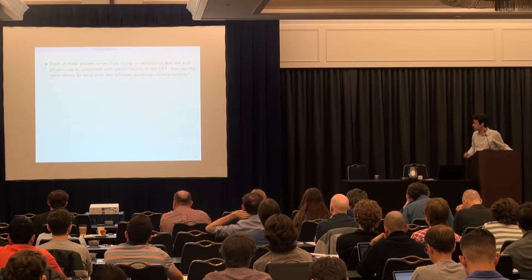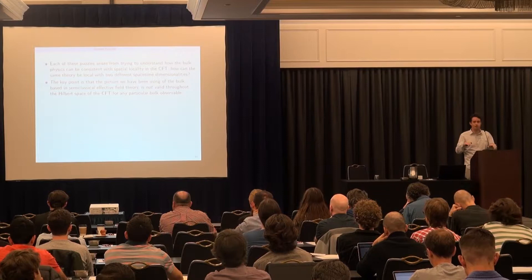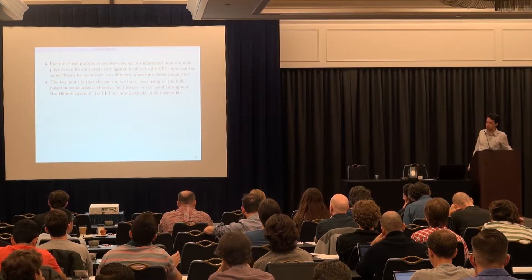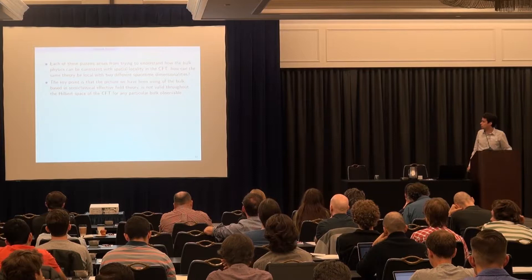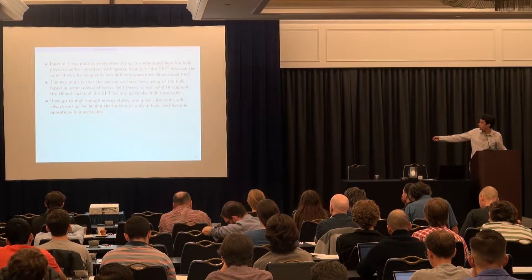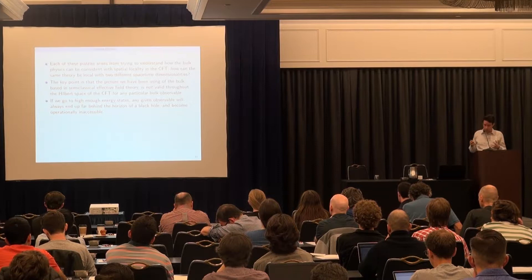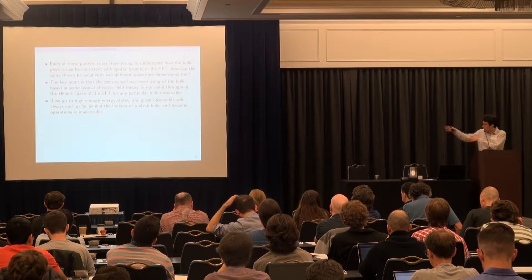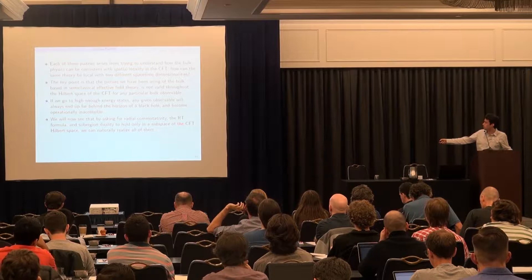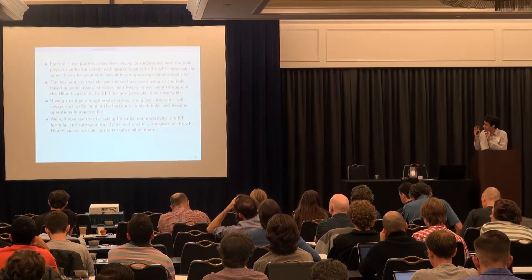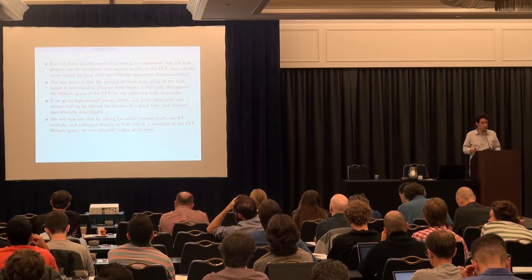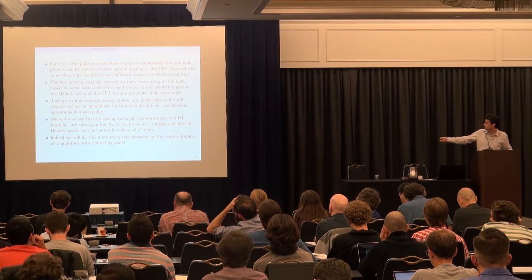The key point is that the bulk picture is based on semiclassical effective field theory — it's not valid throughout the full CFT Hilbert space. We should understand that our observables have a regime of validity. By asking that radial commutativity, Ryu-Takayanagi, and subregion duality only hold in a subspace of the CFT Hilbert space, that's enough to resolve all of the problems. Of course, we'll interpret that subspace as the code subspace of a quantum error correcting code.